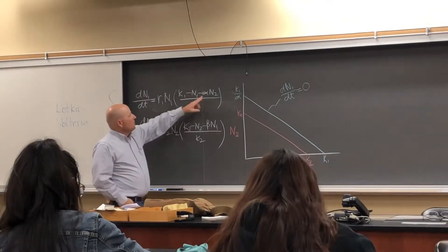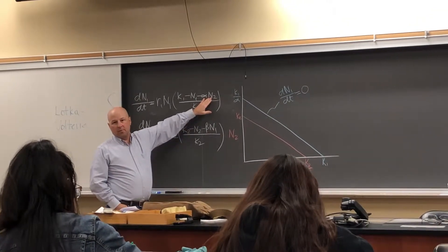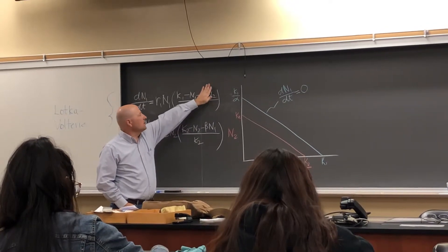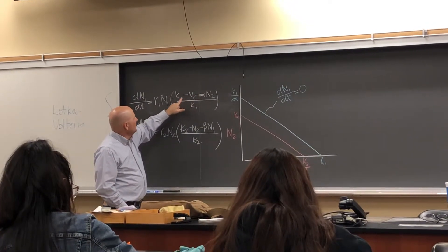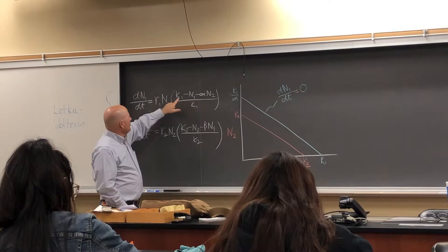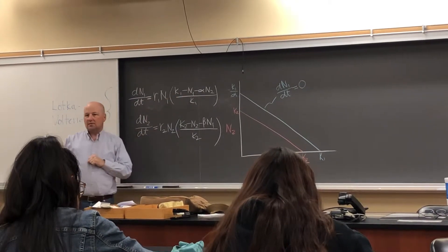So we know that, for example, if there are no competitors for population one, species one, take that away, then this would equal zero when species one is at their carrying capacity.